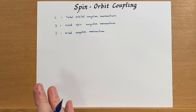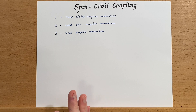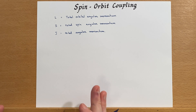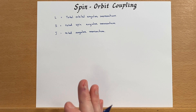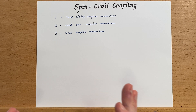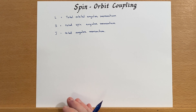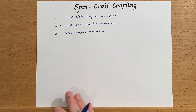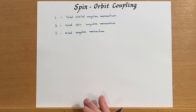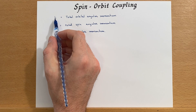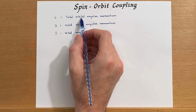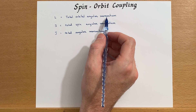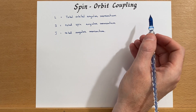Now that we've determined the number of microstates and looked at the free ion terms, we should talk about spin-orbit coupling. To do that we need to consider a few different numbers. The first one is L, which is the total orbital angular momentum quantum number.